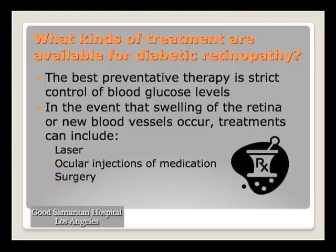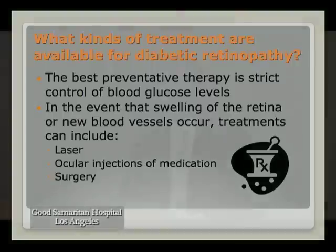So what treatments are available? The best preventative treatment is strict control of blood sugars. Work with your internist or endocrinologist to achieve this. Better blood sugar control means you're less likely to get diabetic retinopathy or complications in your feet or heart. Even if you already have damage, controlling blood sugars can prevent further damage. You cannot stress enough the importance of working with your primary care doctors to get blood sugar under control.